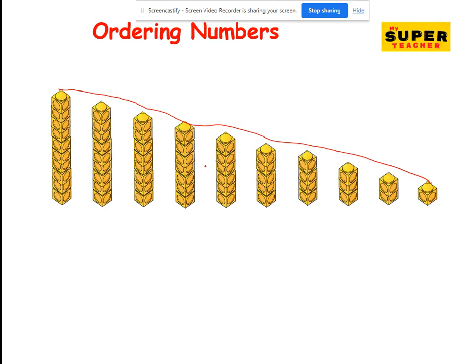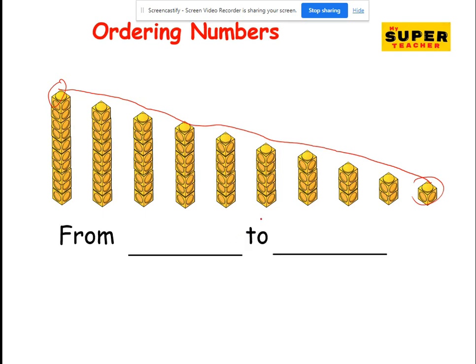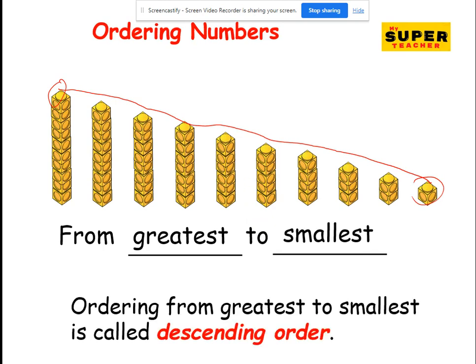Now watch this. What do you observe? I counted from the biggest to the smallest. You can see the numbers got smaller as we counted on — it gets smaller from big down to small. This is from greatest to smallest. Ordering from greatest to smallest is called descending order. The numbers get smaller when you count in descending order — when you order from greatest to smallest, the numbers get smaller.